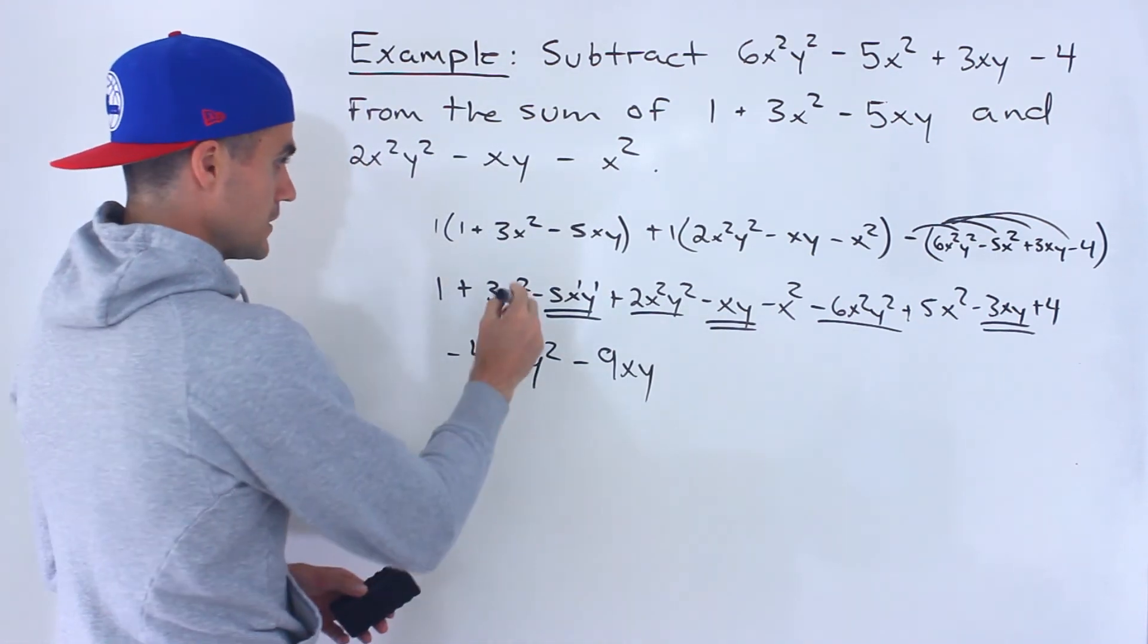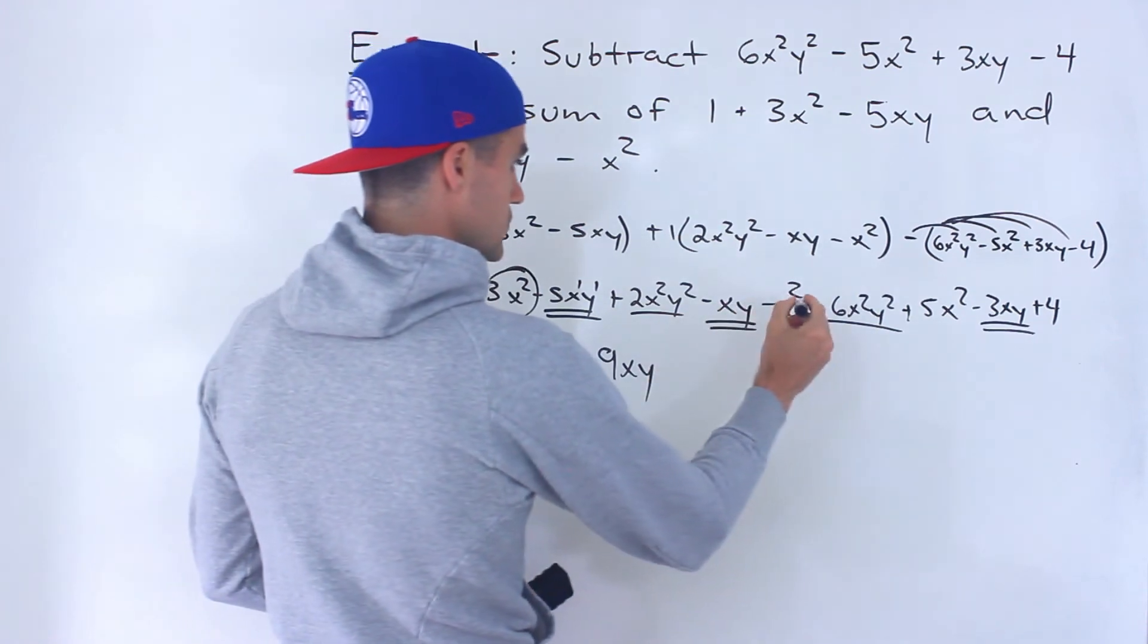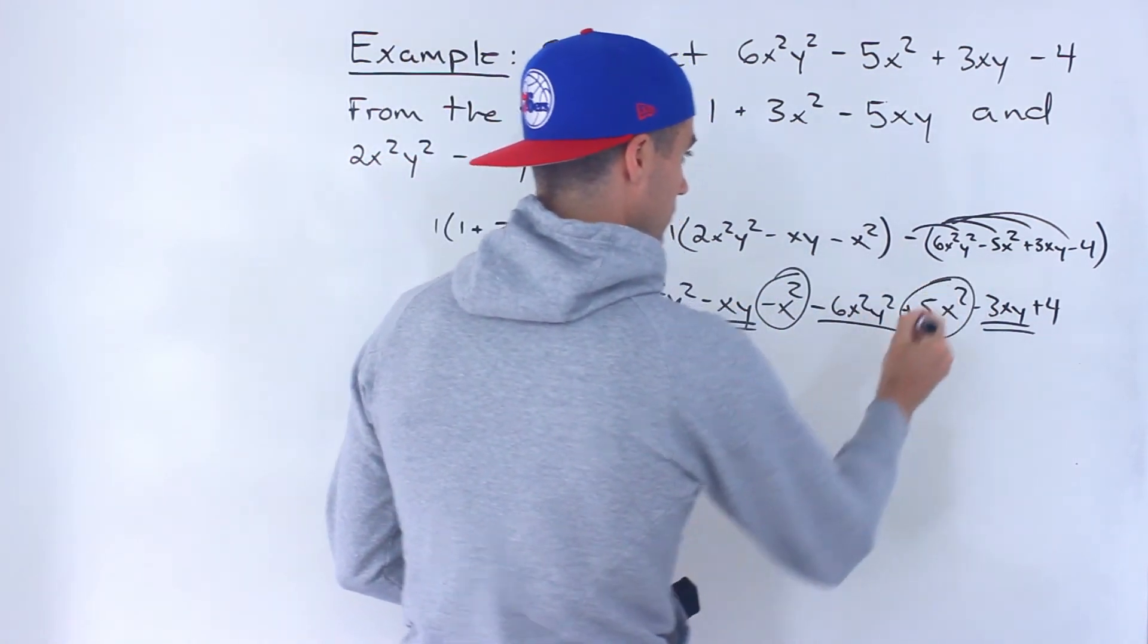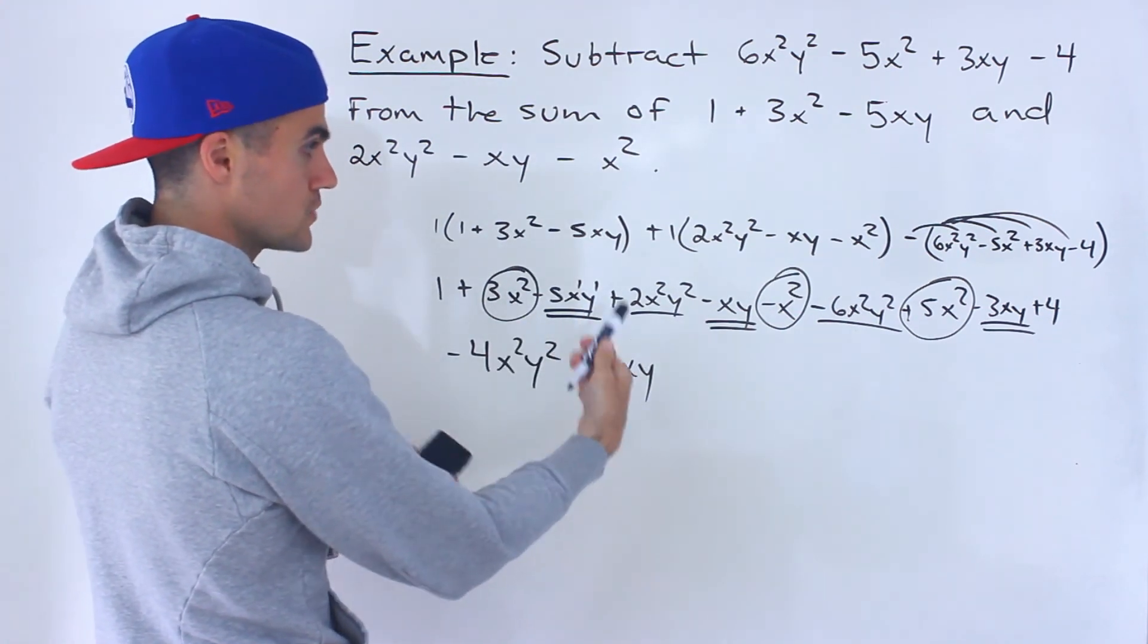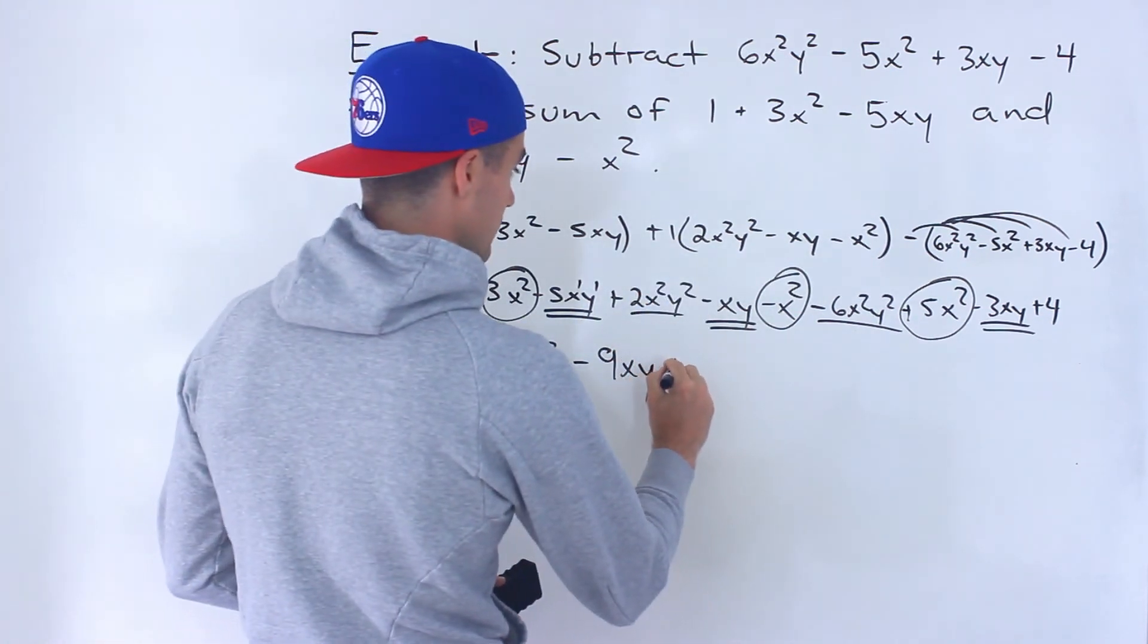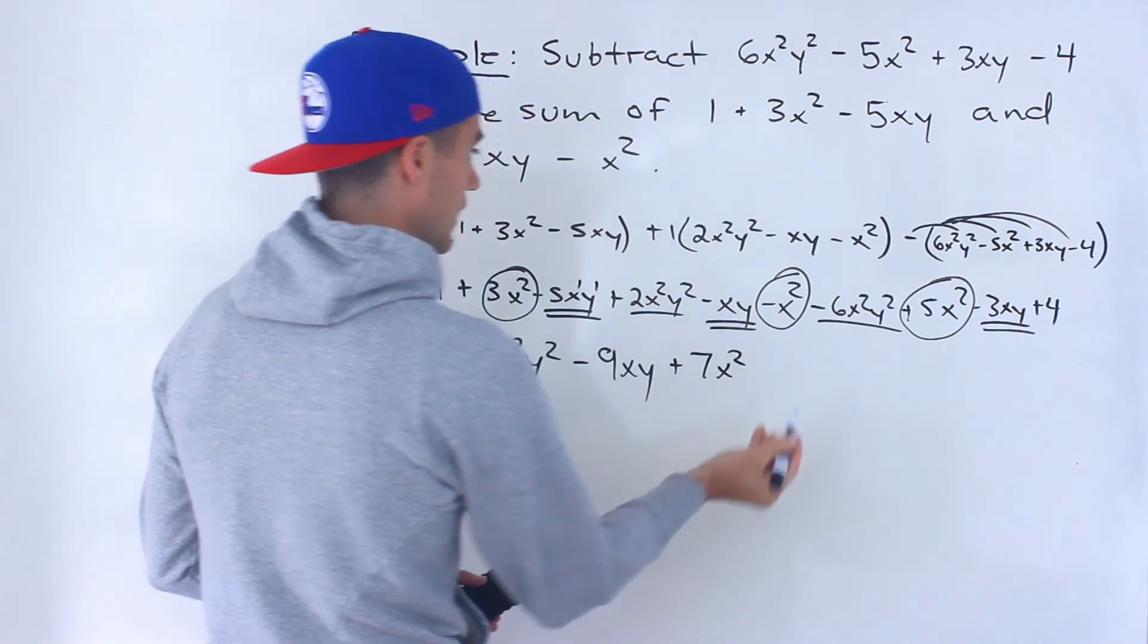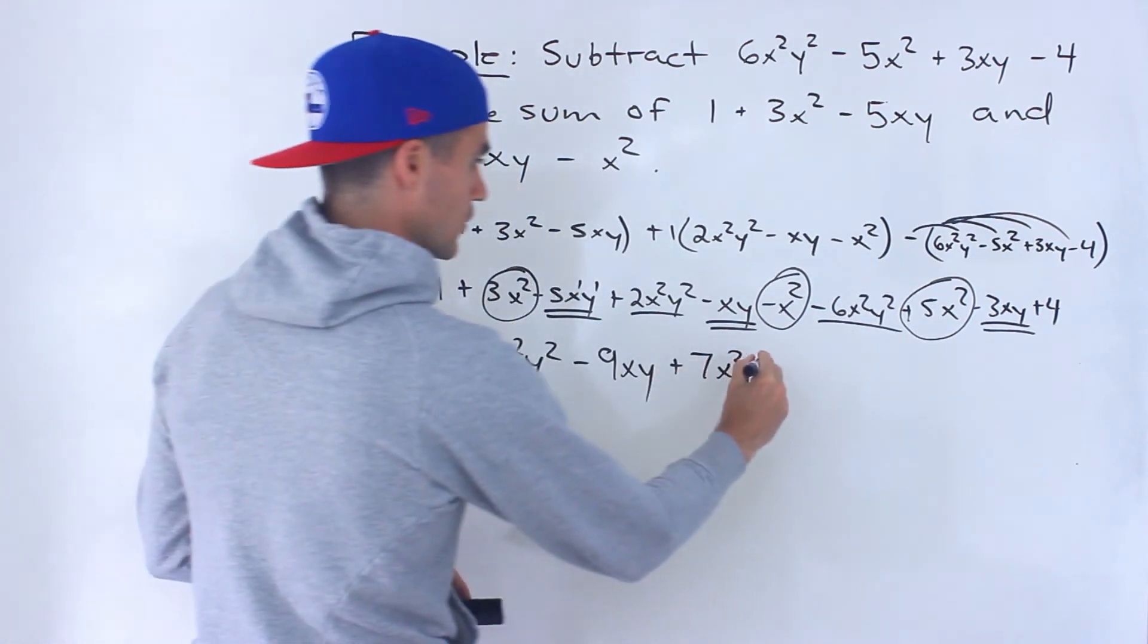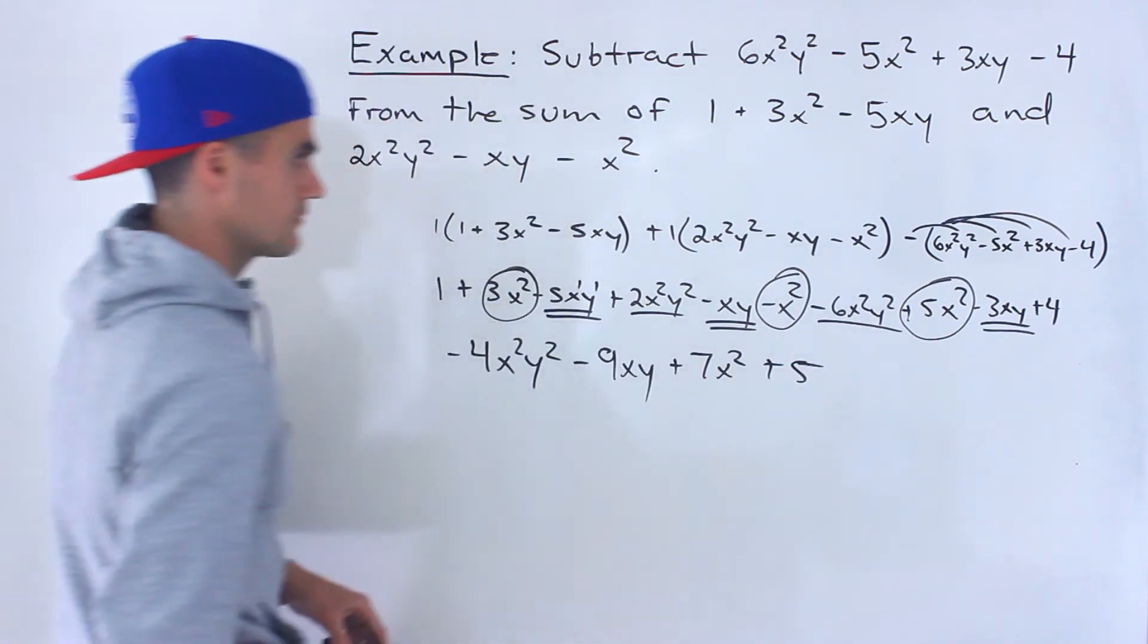And then the next one would be the x². So we'll have 3x² - x² + 5x². So 3x² - x² is 2x² plus 5x² gives us 7x² like that. And then we got the 1 plus the 4 which is 5.